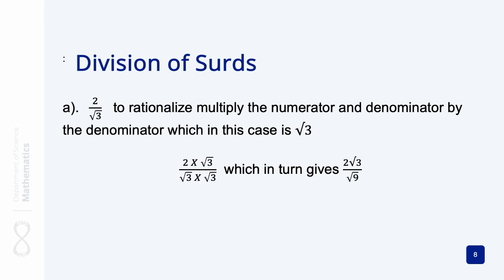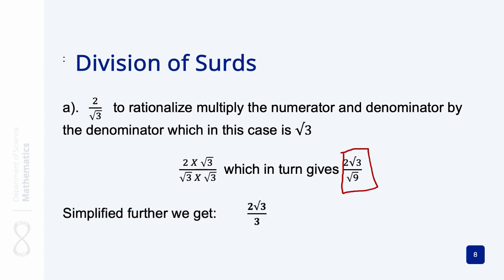We have already gone through the multiplication. Since the number outside the root sign cannot multiply the number inside the root sign, it gives us two root of three on top. The numbers inside the root sign multiply each other, giving us the root of nine. This can be further simplified because nine has a perfect square root, so we have two root of three divided by three, since the square root of nine is three.